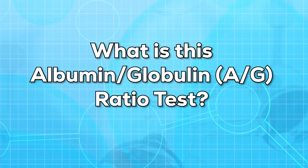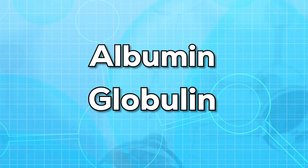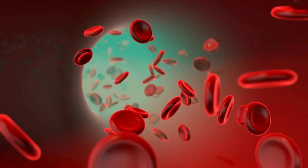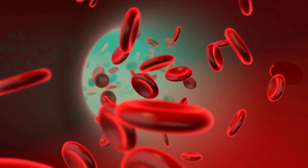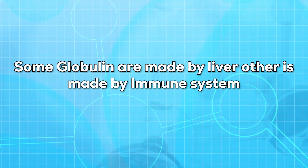First of all, let us know what this ratio test is. A total protein AG ratio test measures the amount of total protein in your blood. There are two major types of protein in your blood: albumin and globulin. Albumin keeps blood from leaking out of the blood vessels. Globulin helps fight infections and move nutrients throughout the body. Albumin is made by the liver. Some globulins are made by the liver, while others are made by the immune system.